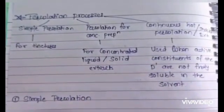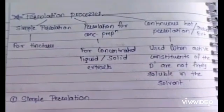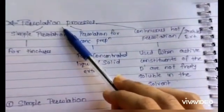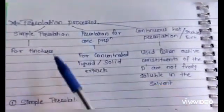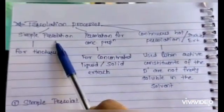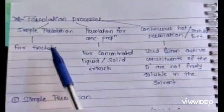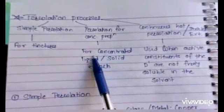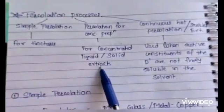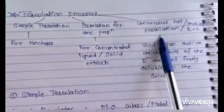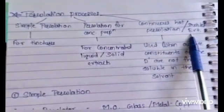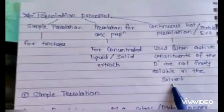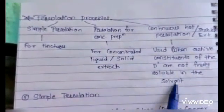Hello everyone, today we are going to study the topic percolation processes, which is a very important topic covered in the extraction process chapter. Percolation is nothing but the process of filtration through a porous substance. There are three types of percolation process: first is simple percolation, used for preparation of tinctures; second is percolation for concentrated preparations, used for preparation of concentrated liquid and solid extracts; and third is continuous hot percolation, also called soxhlet extraction process, used when active constituents of the drug are not freely soluble in the solvent.